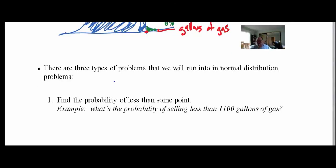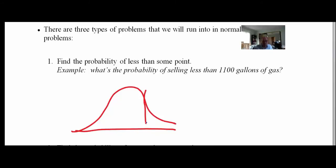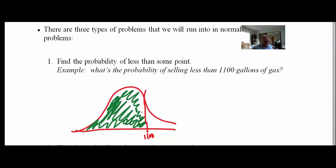There are three types of problems. First: find the probability less than some point — like the probability of selling less than 1,100 gallons. Draw the picture — 1,100 on the axis, shade left. This is just the regular NORMDIST function, or the z-score table.